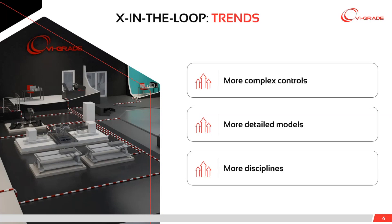You want to do more in the simulation world — not just develop the basic function of a new control system, but move towards calibration. For that, you need more detailed models covering a higher frequency range and allowing you to dive into specific components of your vehicle. Last but not least, we're talking about more disciplines — not only vehicle stability or lane keeping assist, but also understanding the effect on noise, vibration, and harshness attributes.